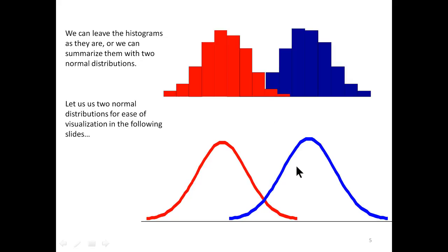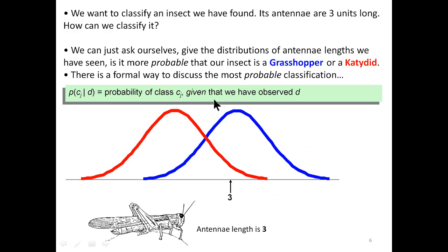We can use a histogram to summarize the distribution as a normal distribution, which is like a bell shape. The normal distribution means that whatever we see in centipedes and grasshoppers, they have a natural distribution of their abdomen length versus antenna length. From this, we want to classify an insect we have found whose antenna is three units long — how can we classify it? It's a very interesting question.